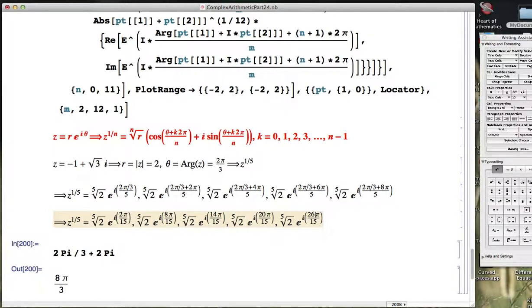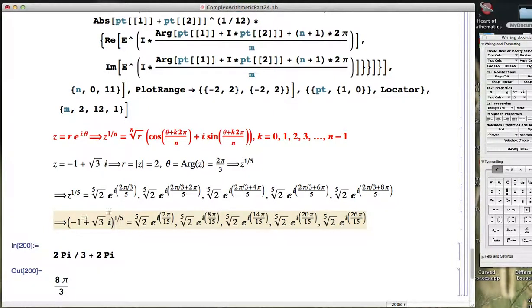If we did the next one, it would be 32 pi over 15. And by subtracting 30 pi over 15 from that, which is 2 pi, we would get back to 2 pi over 15. 32 pi over 15 would give us the same complex number as we have from this one. So this would represent all the fifth roots of this complex number, the set of fifth roots. So that's our particular example.